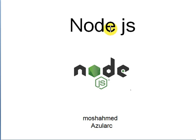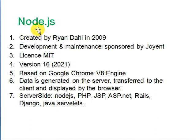This is a talk on Node.js by Mosh. Node.js was created in 2009, runs under an MIT license, and the current version as of 2021 is version 16. It is based on the Google Chrome V8 engine. The main idea is server-side programming — the server generates data and transfers it to the client.